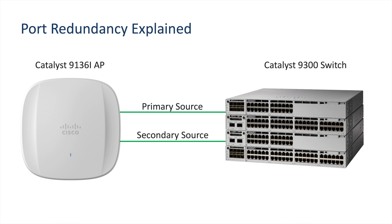While the primary PoE is up, the AP will only draw power from that source. If the primary PoE goes down, the AP will immediately switch to using the secondary source, thus avoiding an AP shutdown or even restart.